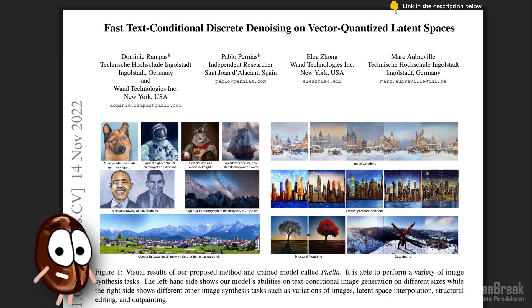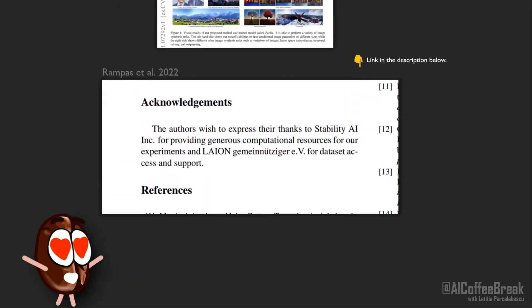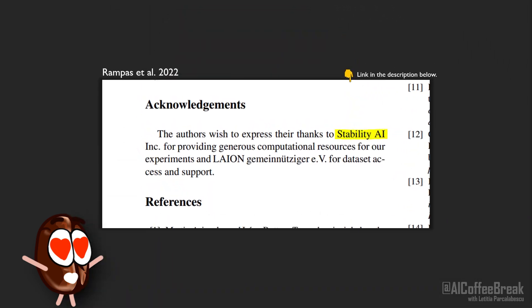Today we are going to explain how Paella works, which is a new way to generate images conditioned on text without using diffusion or transformers. Paella runs faster than diffusion and arguably is conceptually easier to understand than diffusion. It also comes from a normal academic team supported by Stability AI with compute though.